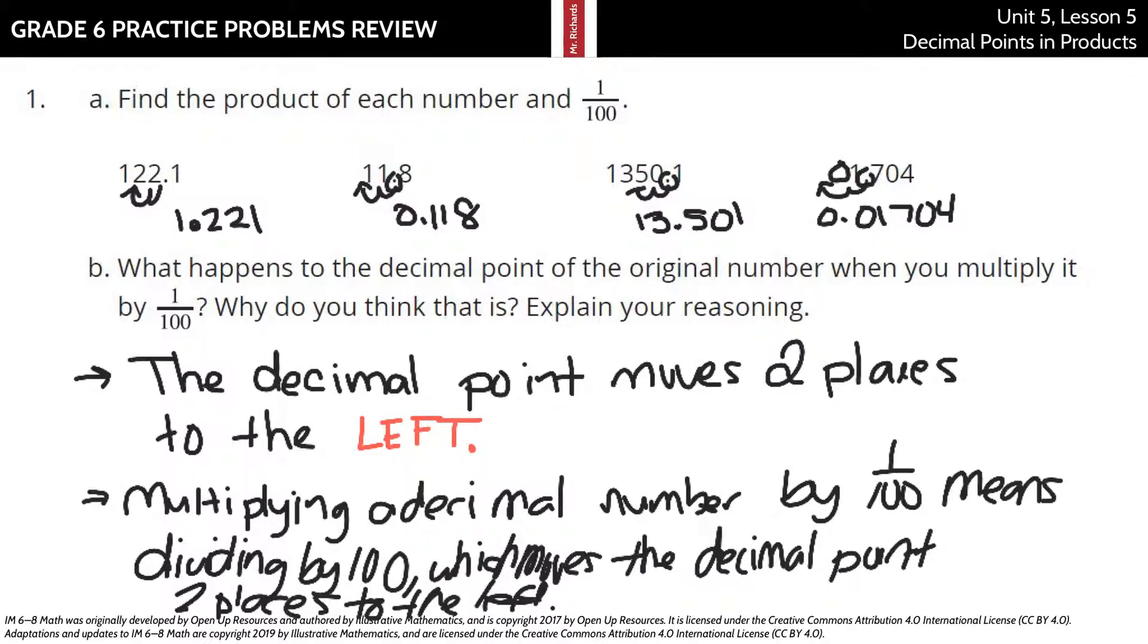Now, what happens basically when you're multiplying by one one-hundredth is you're moving the decimal point two places to the left. And so multiplying a decimal number by one one-hundredth means dividing by one hundred, which moves the decimal point two places to the left, which is just like one of the activities we did today in class.